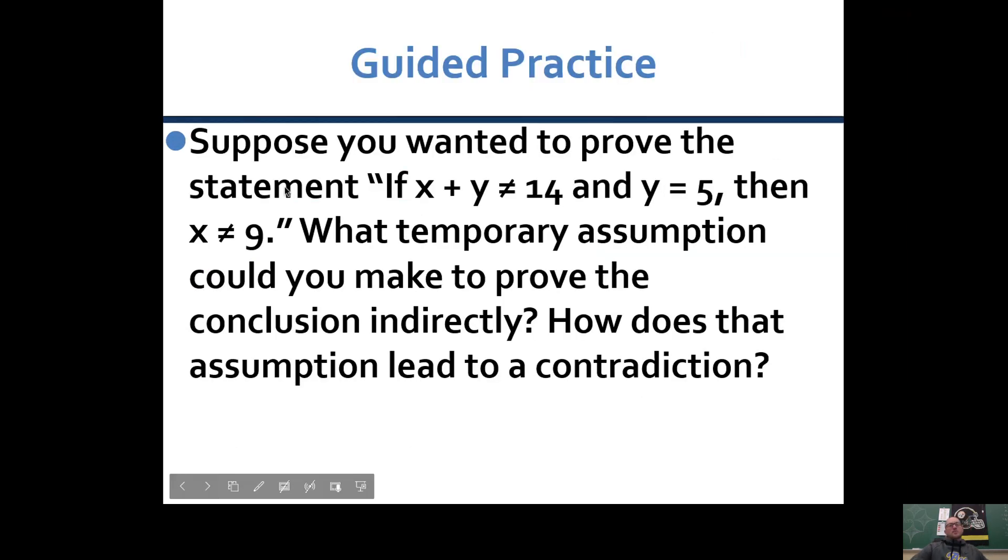We're going to try one together. Suppose you wanted to prove this statement: If x plus y does not equal 14 and y equals 5, then x doesn't equal 9. What temporary assumption could you make to prove the conclusion indirectly? How does that assumption lead to a contradiction? Well, here's your statement and it's a conditional statement. We're going to assume what we don't want to show. We want to show that x doesn't equal 9, so we're going to assume the opposite. So we're going to assume that x does equal 9.